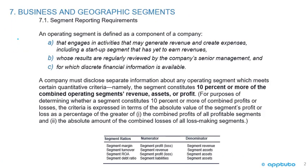An operating segment is defined as a component of a company that: A, engages in activities that may generate revenue and create expenses, including a startup segment that has yet to earn revenues; B, whose results are regularly reviewed by the company's senior management; and C, for which discrete financial information is available. That's an important key point.